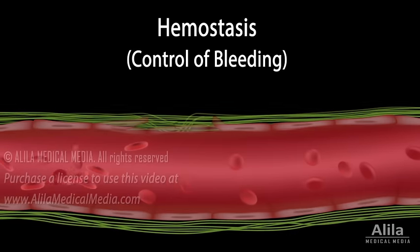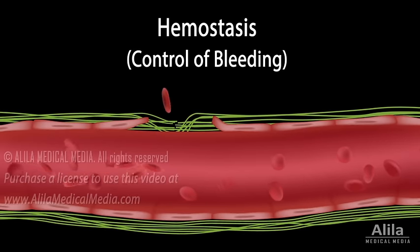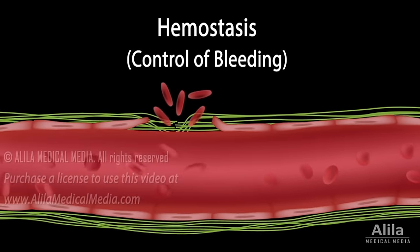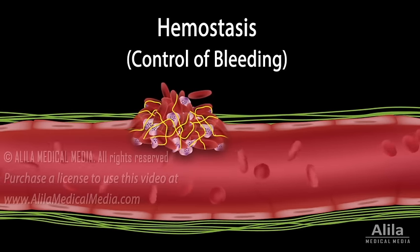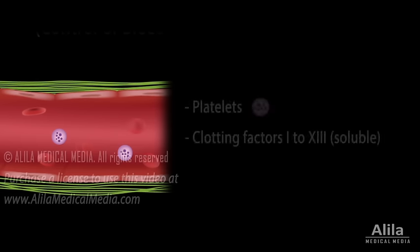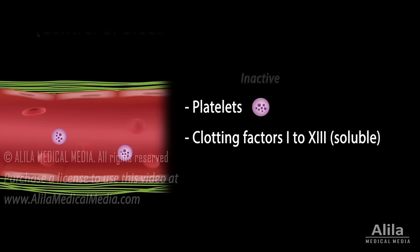Hemostasis is the process that controls bleeding at the site of injury. Blood loss is stopped by formation of blood clots that seal the breaks in blood vessels. Hemostatic mechanisms involve small cell fragments known as platelets and a dozen soluble clotting factors. These elements are always present in the blood in their inactive form, ready to activate typically within seconds of an injury.